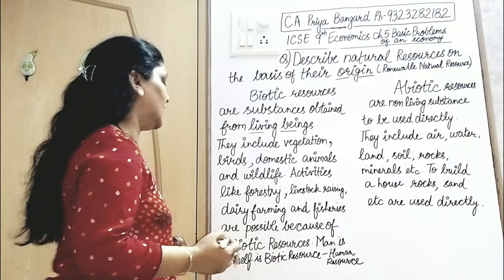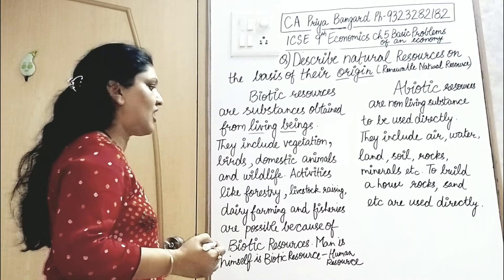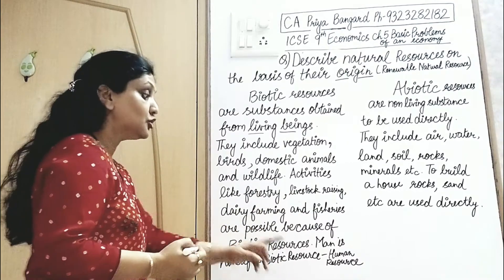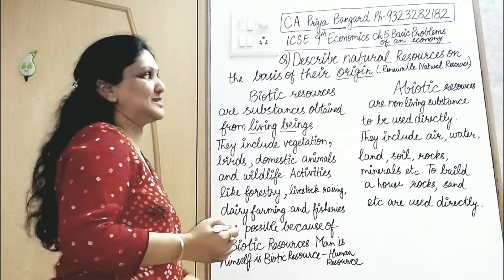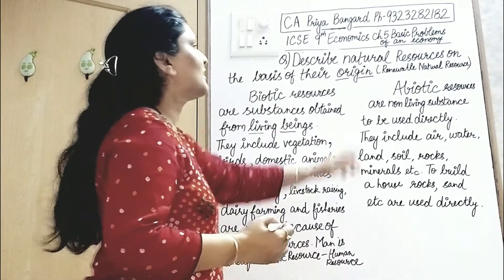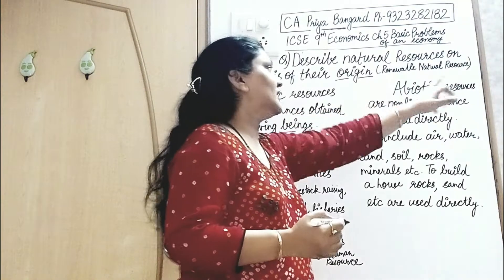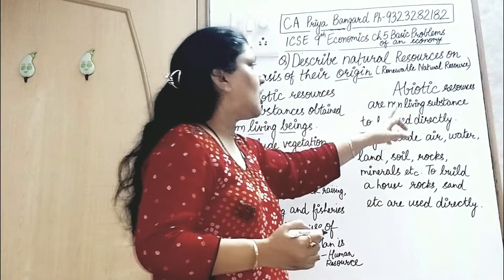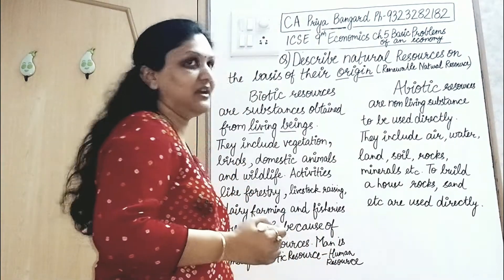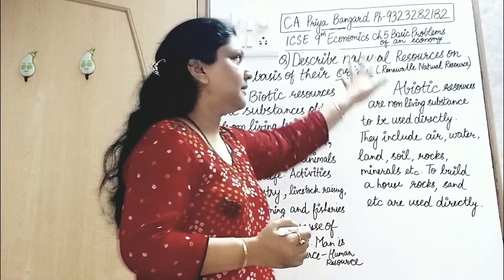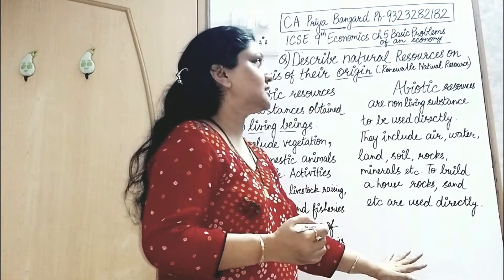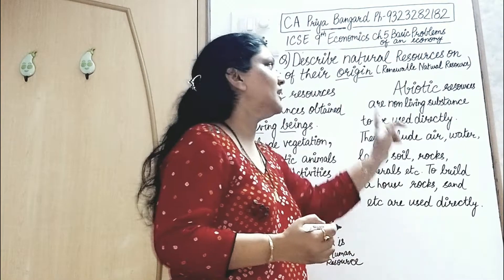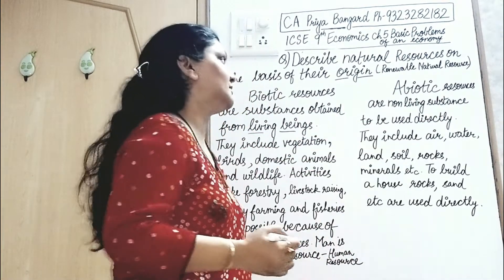Keywords for biotic resources: vegetation, domestic animals, wildlife, forestry, livestock raising, dairy farming, fisheries, and human resource. Abiotic resources are non-living substances.